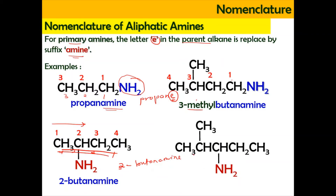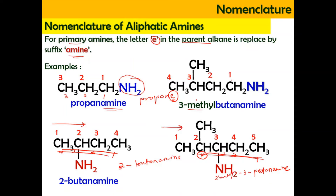For the next structure, we number from the left-hand side: one, two, three, four, and five. We don't number from the right side because otherwise the substituent would take number four instead of the lower number two. Because there are five carbons, the parent name is pentanamine. The amino group is at carbon number three, so it is 3-pentanamine. And there is a methyl group at carbon number two, so the full name is 2-methyl-3-pentanamine.